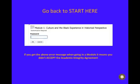This screen will pop up and you will click on 'OK' to agree to the academic integrity guidelines and regulations. If you find that when you click on the module and get an error message like this one, that means you did not click on agree for the academic integrity agreement. In that case you'll want to go back to 'Start Here' and do it.